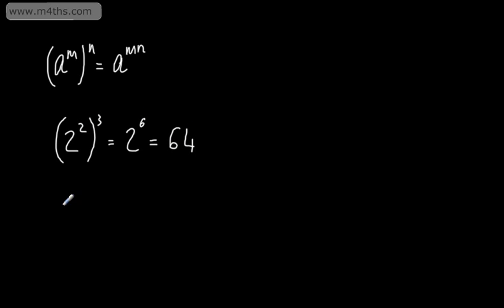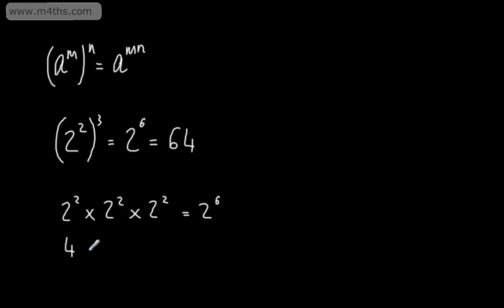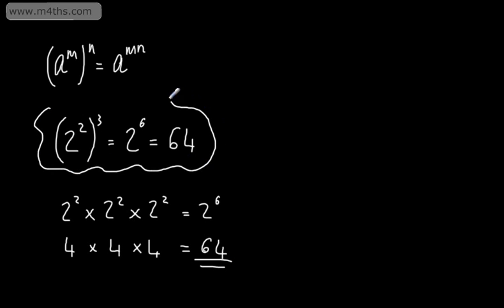This is the same as saying 2 to the power of 2, multiplied by 2 to the power of 2, multiplied by 2 to the power of 2. Going back to our addition rule when we multiplied, we can see this is 2 to the power of 6. Or, this is going to be 4 multiplied by 4 multiplied by 4, which is 64. Clearly, this is a much easier method to use, especially when the numbers get big or quite tricky.